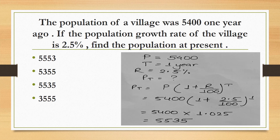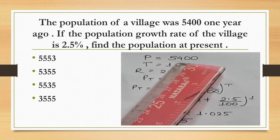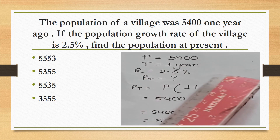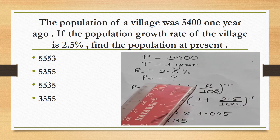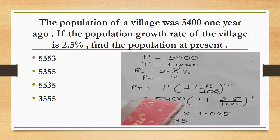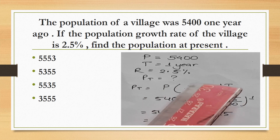The population of a village was 5,400 one year ago. If the population growth rate is 2.5%, find the present population. One year ago population = 5,400, time = 1 year, rate = 2.5%. We need to find PT (population at present).